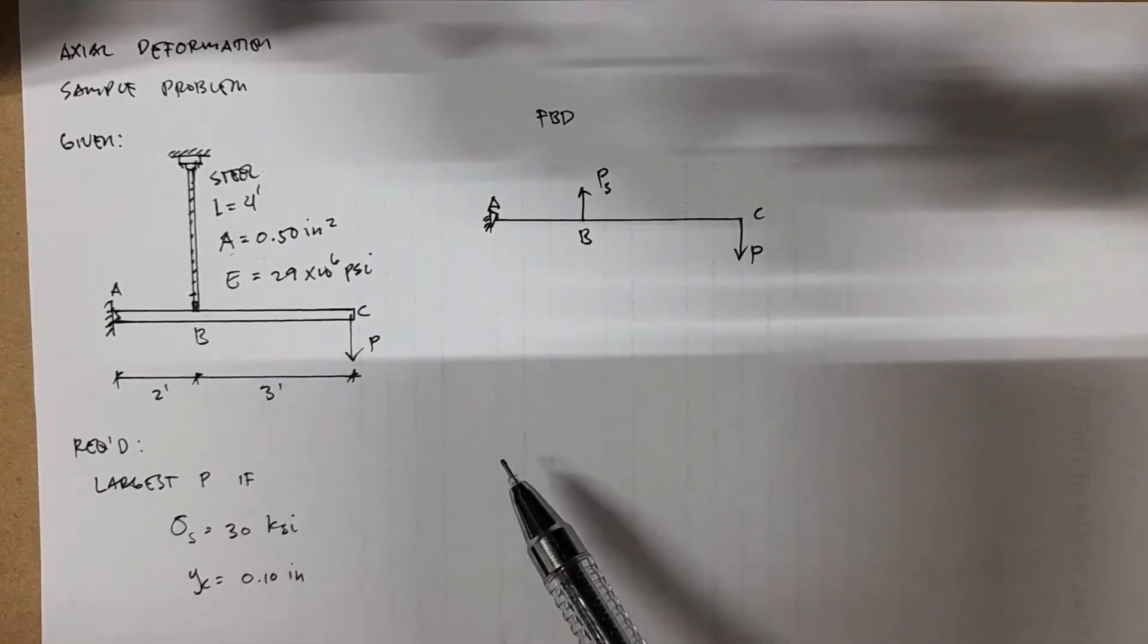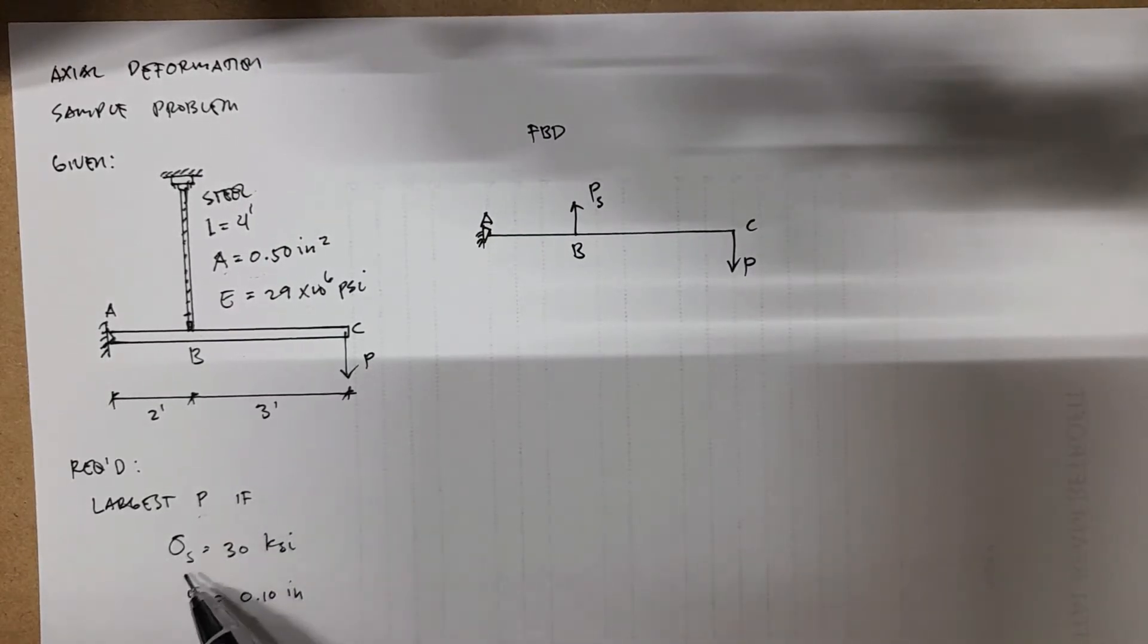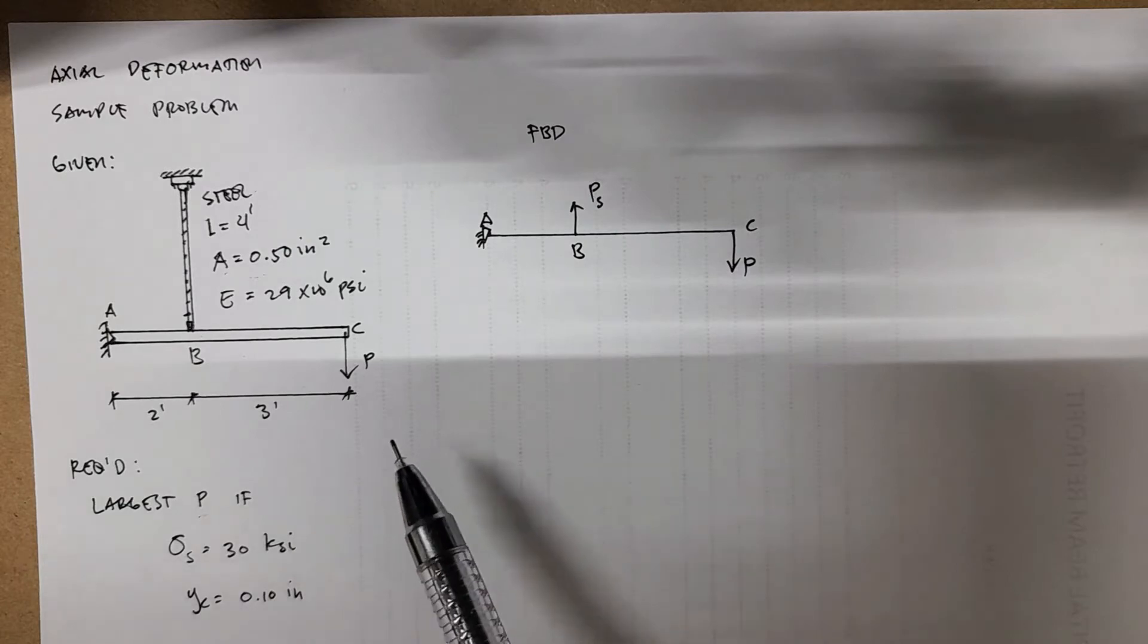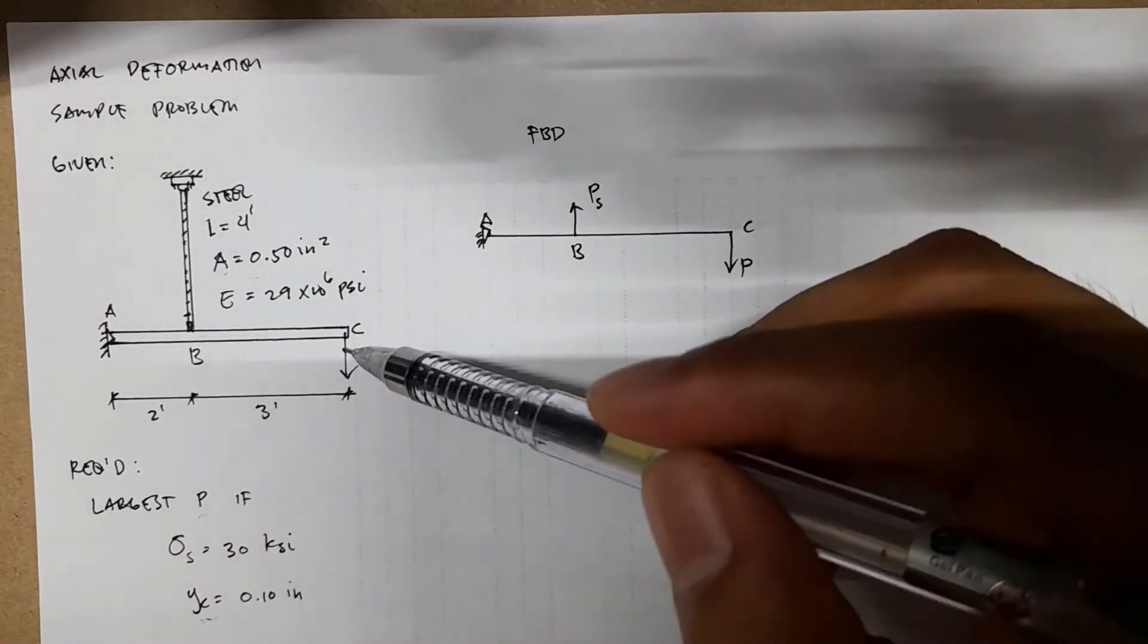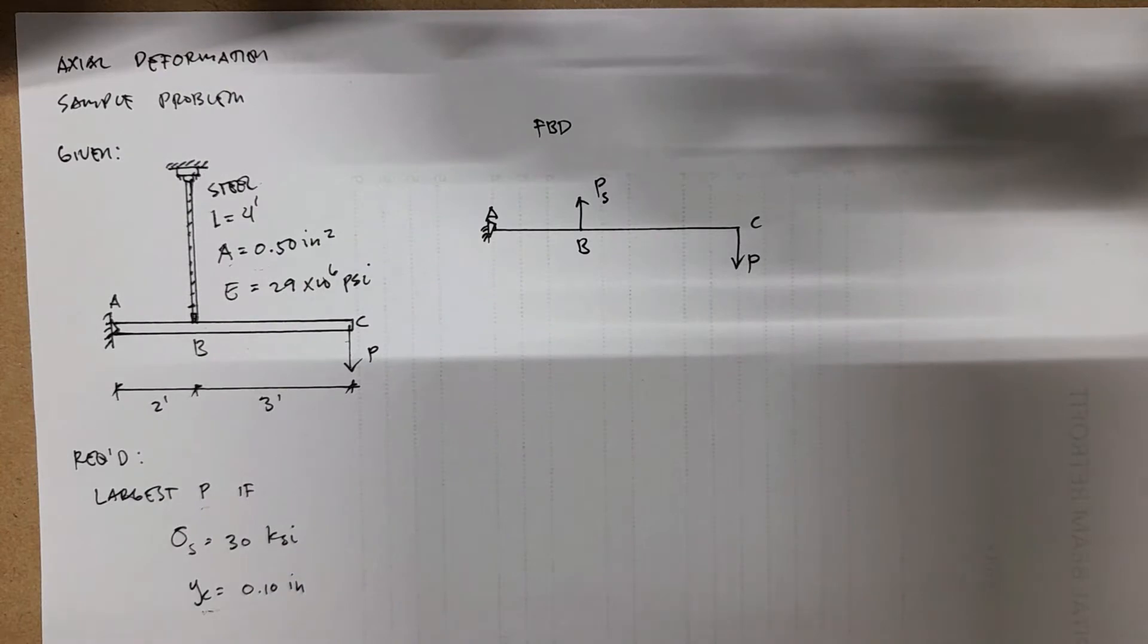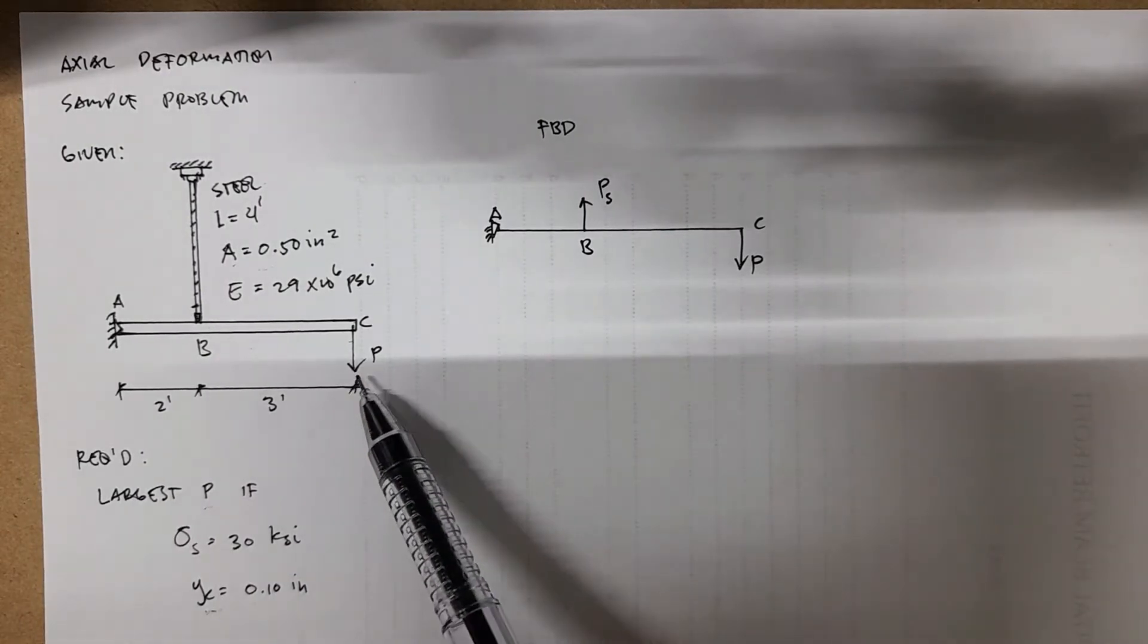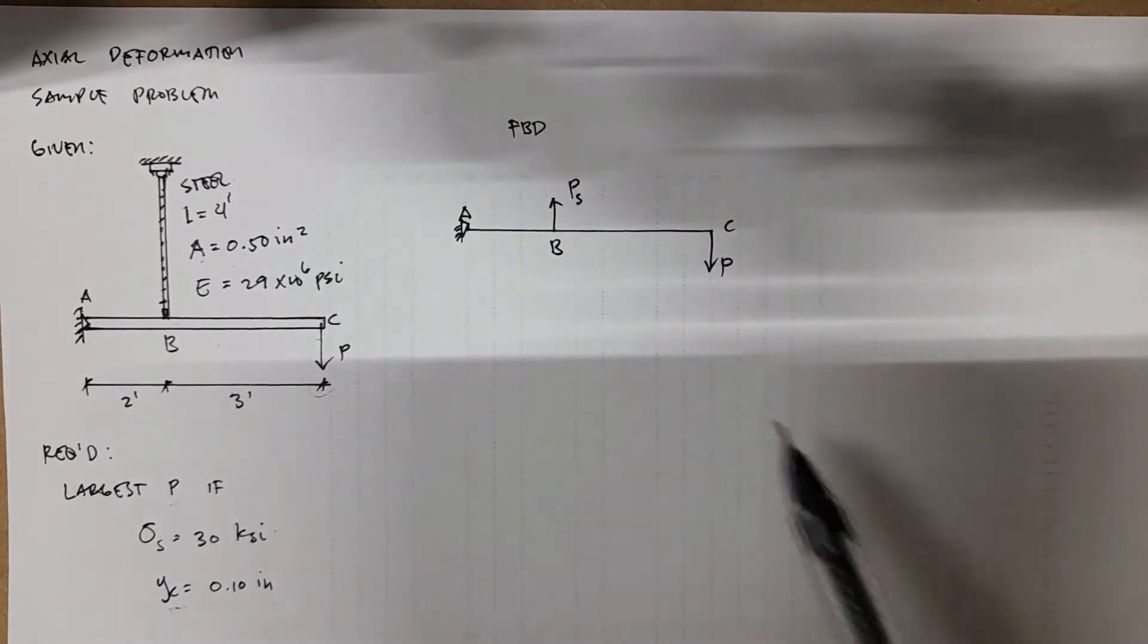We are asked to find the largest P so that the stress in steel of 30 ksi is not exceeded. The second condition is the largest P so that the movement at point C will not exceed 0.10 inches, marked as YC. We have to find the largest P so that both of these conditions are not exceeded.